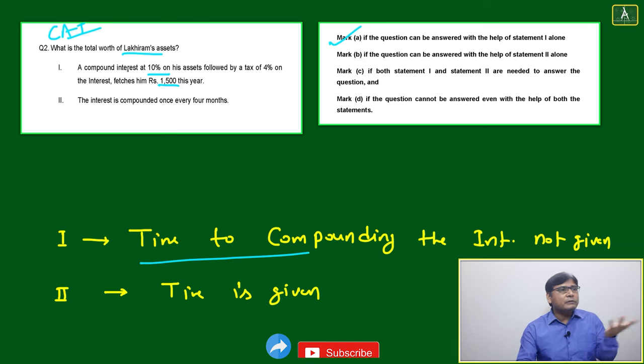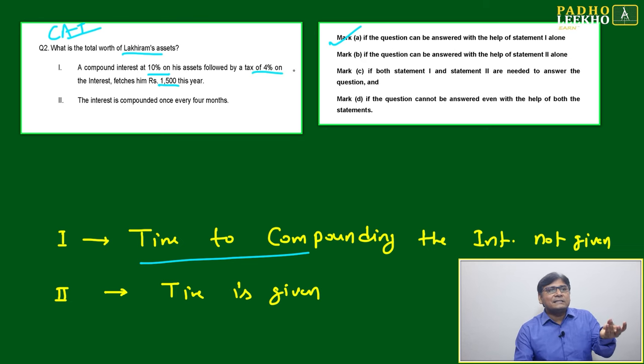You'll mark option A because everything is given: compound interest rate is given, tax is given, deduction is given, total amount—everything. But what is your compounding time? Compounding time means what is the periodicity of compounding—after how many months, years, or days it is compounding? It is not given.